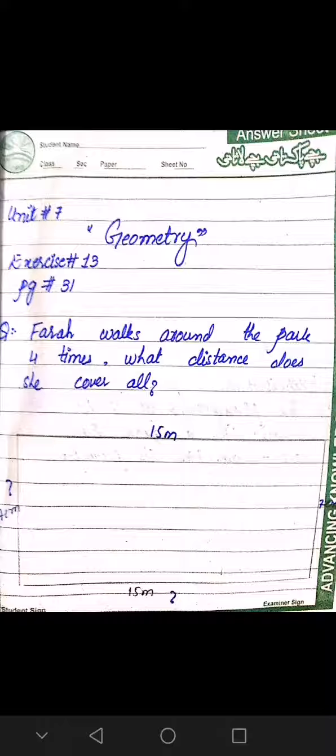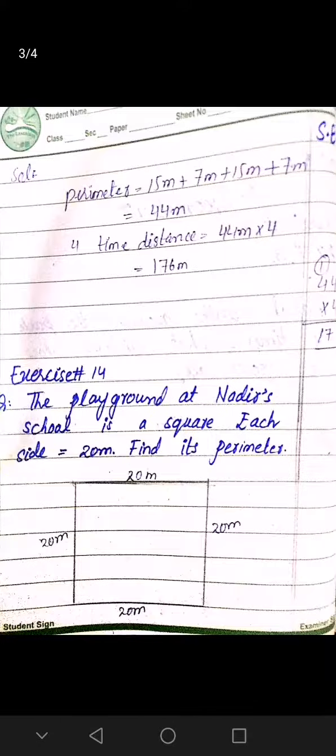Our first question is: Farah walks around the park four times. What distance does she cover altogether? It means Farah walks around the park four times, so approximately how much distance does she cover? We have a park in rectangle shape with length 15 meters and width 7 meters.